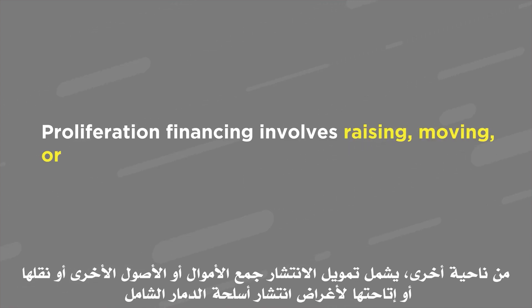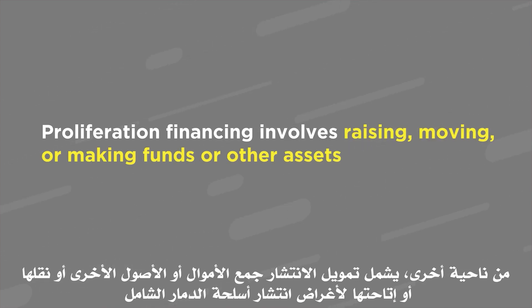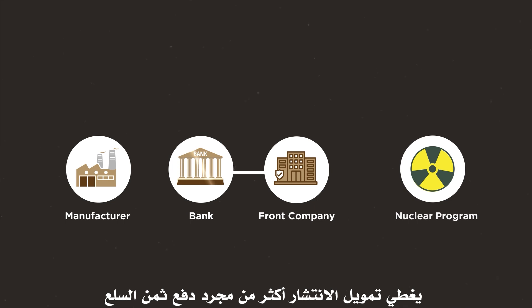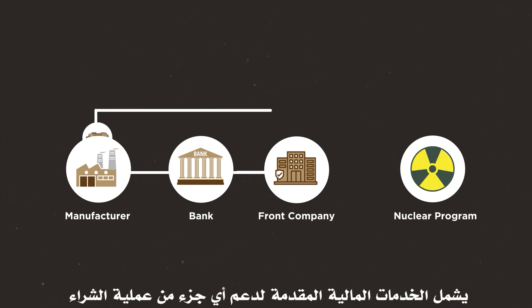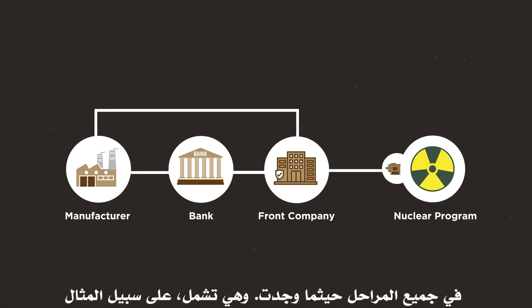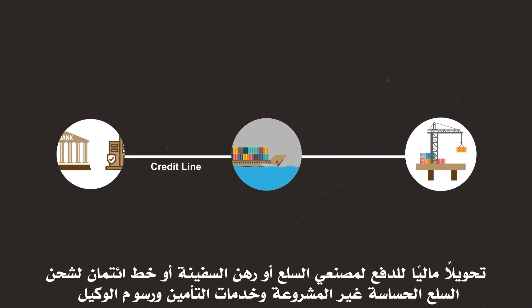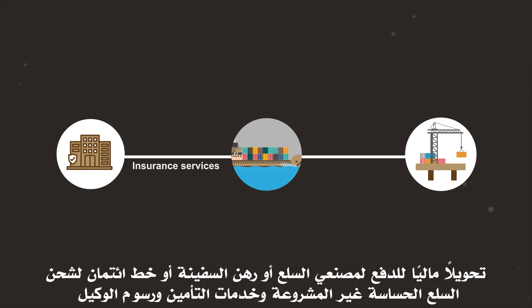On the other hand, proliferation financing involves raising, moving, or making funds or other assets available for the purposes of WMD proliferation. The financing of proliferation covers more than simply the payment for goods. It involves financial services provided in support of any part of the procurement process at all stages where it exists. It includes, for example, a financial transfer used to pay manufacturers, a ship mortgage or credit line for shipment of illicit sensitive goods, insurance services, and agent fees.